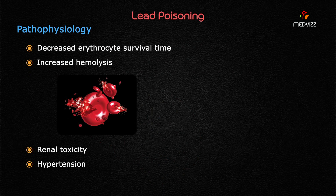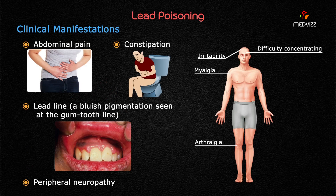There will be a decreased erythrocyte survival time, leading to increased hemolysis, renal toxicity, and hypertension. The clinical manifestations include abdominal pain — mainly called lead colic — constipation, the lead line (bluish pigmentation seen on the gum-tooth line), and peripheral neuropathy. All these are very important clinical manifestations of lead poisoning.